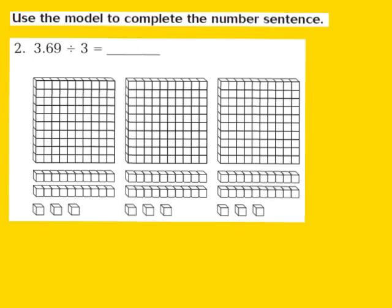Now let's take a look at question number 2 together. Question 2 says to use the model to complete the number sentence. For question 2, they give us 3 and 69 hundredths divided by 3. Our first step is to draw a quick picture to represent the dividend, which is 3 and 69 hundredths. They've already drawn the quick picture to represent 3 and 69 hundredths.